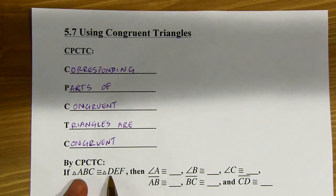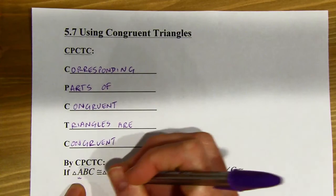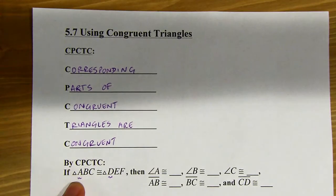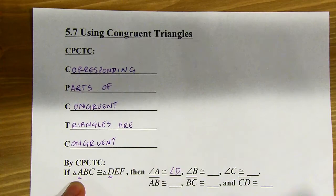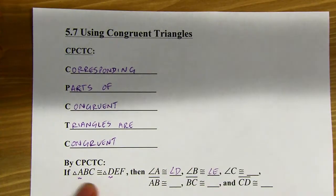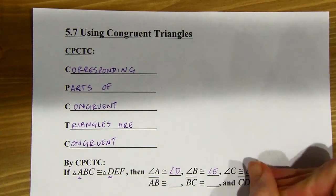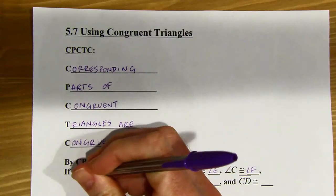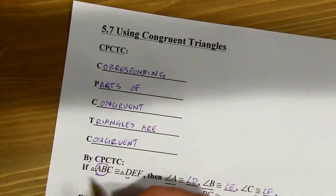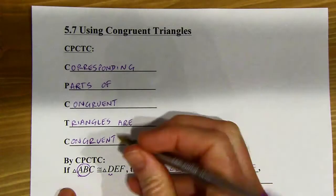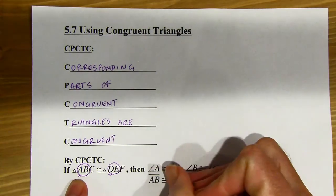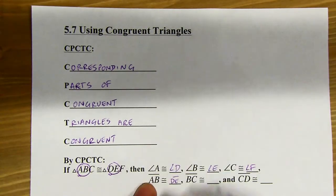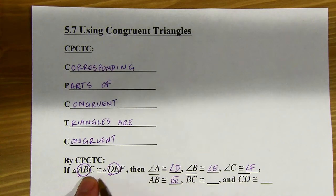We've got this congruency statement here. I can see that angle A and angle D are in the same slot in my congruency statement, so angle A is going to be congruent to angle D. B and E are in the second slots. C and F are in the third slots. And we can do the same thing with the sides. Segment AB lines up with DE, so those two segments will be congruent, and you can follow that same pattern.